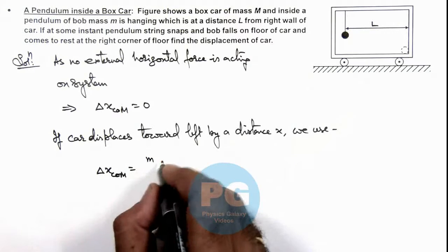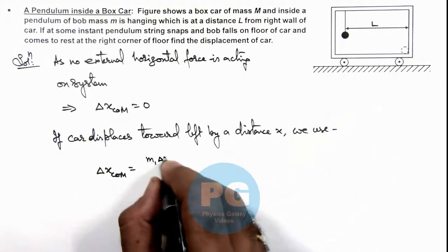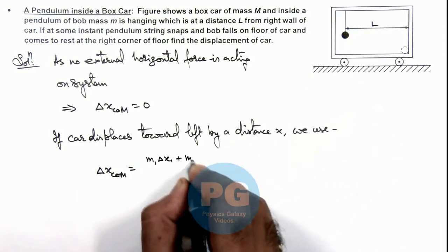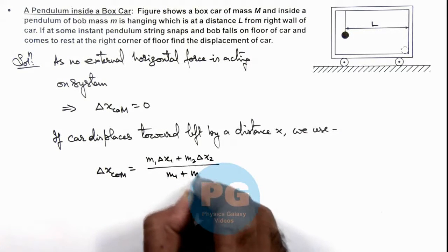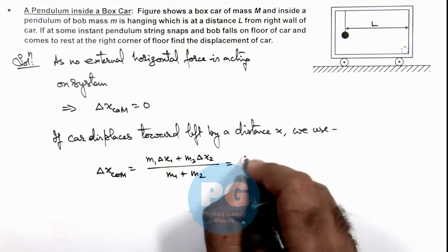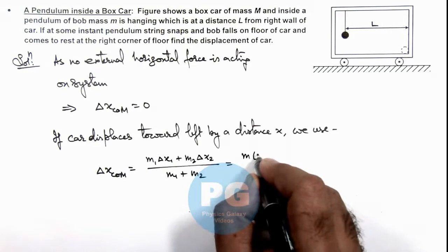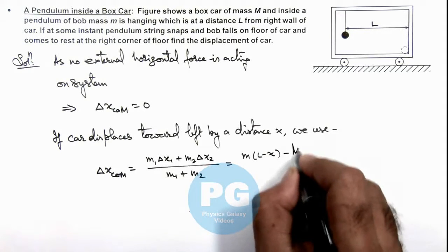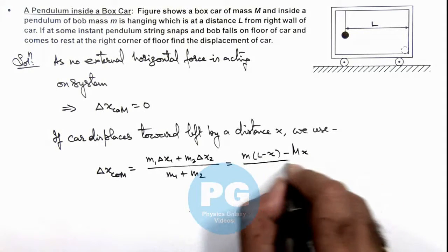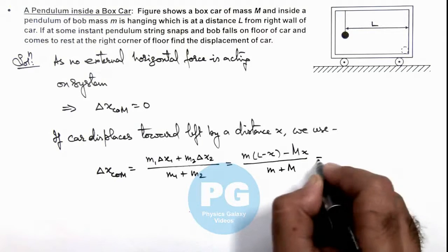We can write the relation of x center of mass as m1 delta x1 plus m2 delta x2 divided by m1 plus m2, where it is m multiplied by L minus x minus capital M multiplied by x divided by m plus M, and it should be zero.